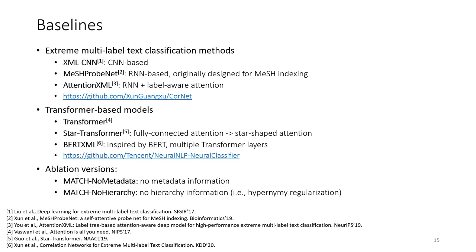For baselines, we include both extreme multi-label text classification methods and transformer-based methods. For all these baselines, their implementation can be found in two GitHub repositories. Also, we create two ablations: no metadata and no hierarchy, because we actually use these two kinds of additional signals in our framework.